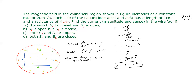For Case A (S1 closed, S2 open) and Case B (S1 open, S2 closed), both loops have the same rate of change of flux, the same area, and the same resistance. So the magnitude of current is 1.25 × 10⁻⁷ ampere in both cases.